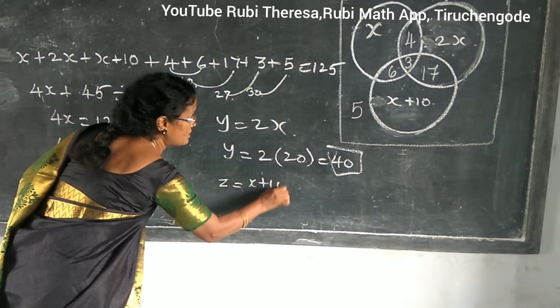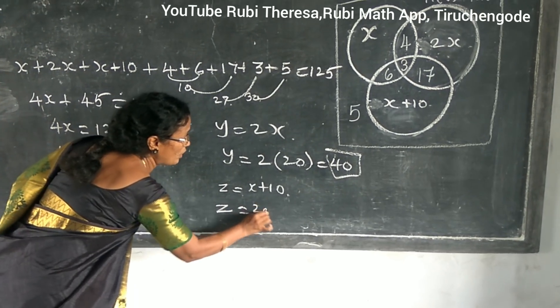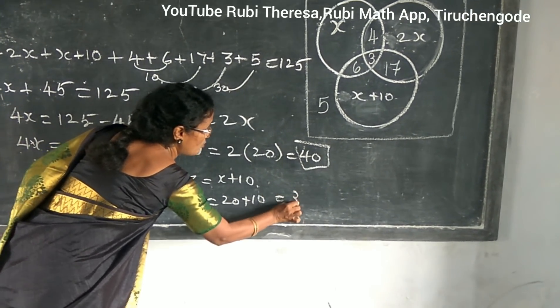Next one is what? Z equal to X plus 10. So Z equal to 20 plus 10. That is equal to 30.